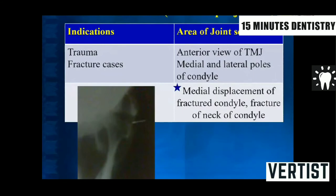The transorbital view is also known as the EMR projection. It is peculiar and frequently asked in MCQs because it is the only TMJ view that gives the anterior view of the TMJ. You can see the medial and lateral poles of the condyle. It is very useful in trauma and fracture cases as it gives an idea of the medial displacement of a fractured condyle and fracture of the neck of condyle.